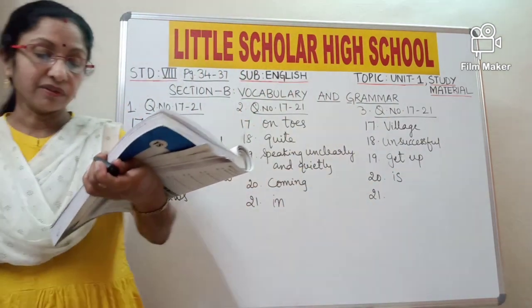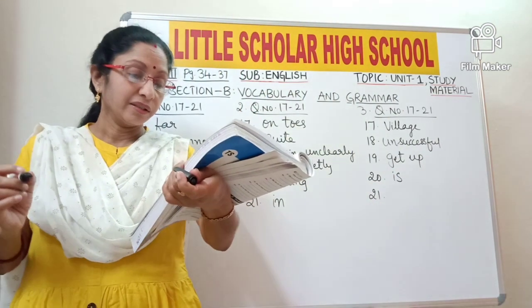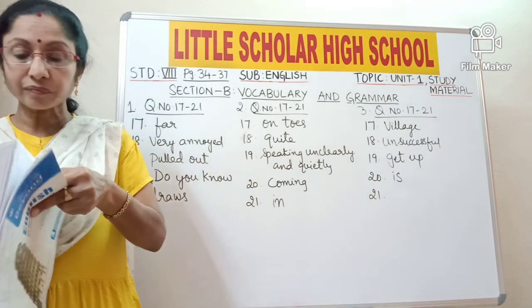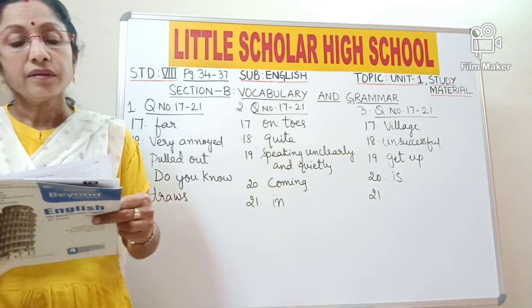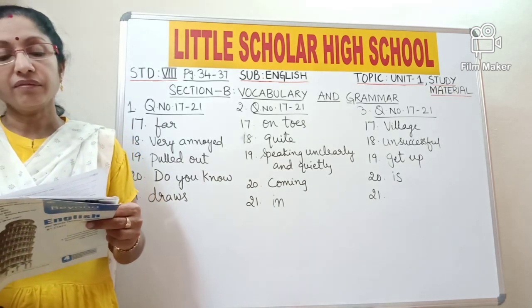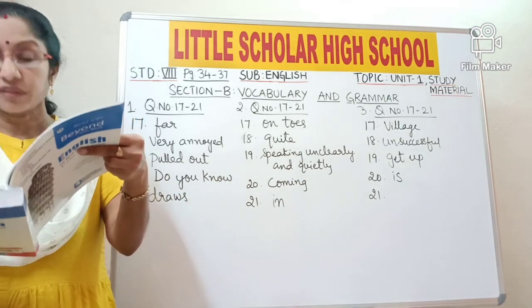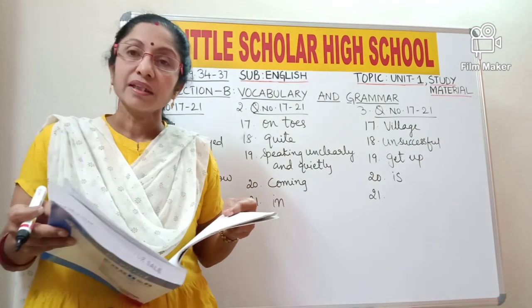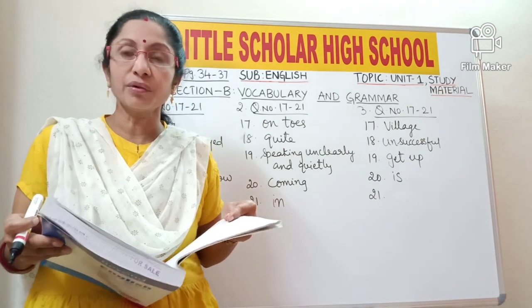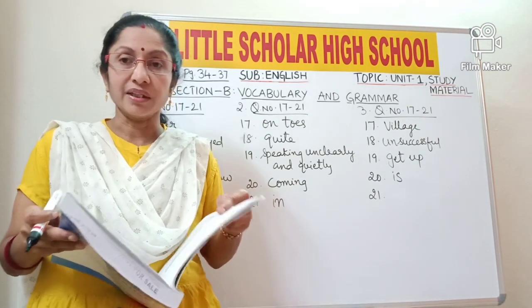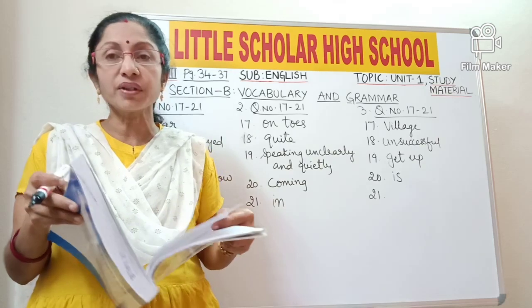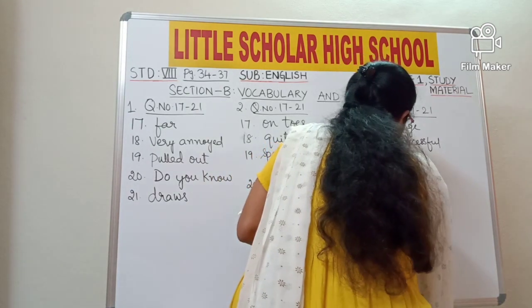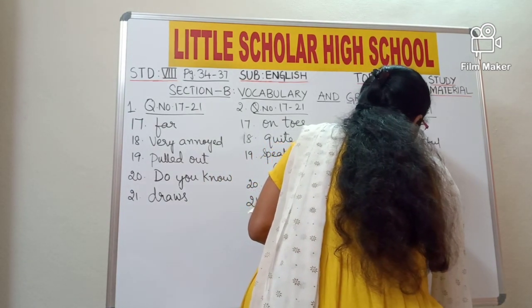Question number 21: 'She got up reluctantly.' Write the opposite of the word 'reluctantly'. The meaning of 'reluctantly' is not willingly — not willing to do something. So the opposite of 'reluctantly' (unwillingly) is 'willingly'.